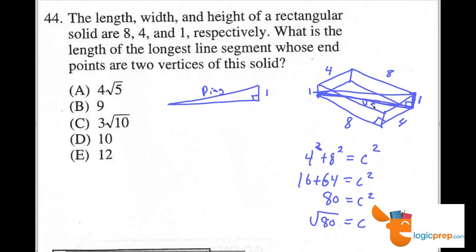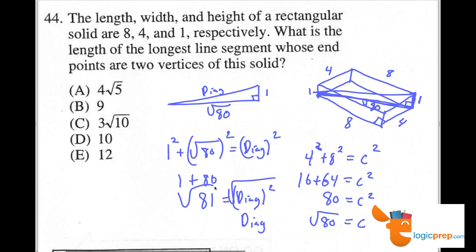Now I know that this bottom length here is square root of 80 along the bottom. Now I can use the Pythagorean theorem again to find the diagonal. 1 squared plus rad 80 squared equals the diagonal squared. So 1 plus 80, which is 81, equals the diagonal squared. I'm going to square root both sides. And the diagonal again is going to be 9.